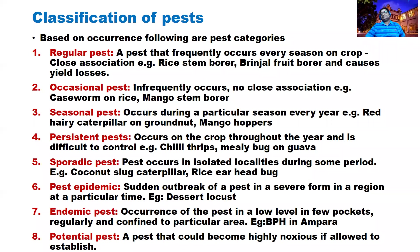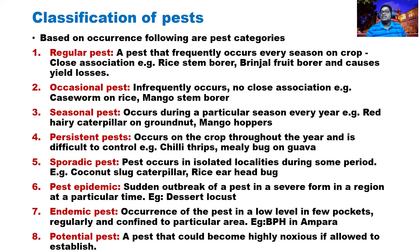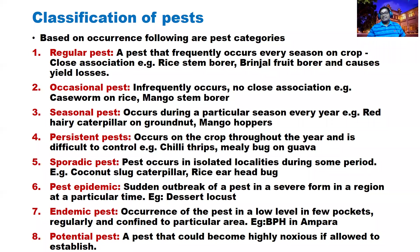Occasional pest — this category of pest occurs infrequently and has no close association with a particular plant. For example, caseworm in rice. You can definitely expect the yellow rice stem borer, but caseworm you will not find everywhere — only in some areas infrequently. It's like attending lectures only occasionally — regular means attending every day without fail.